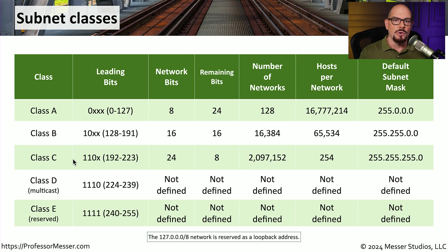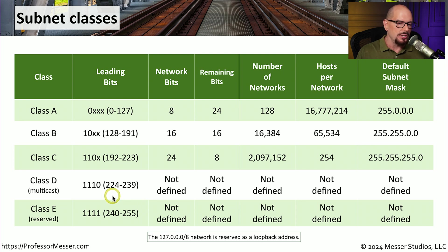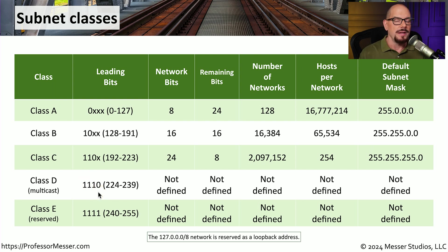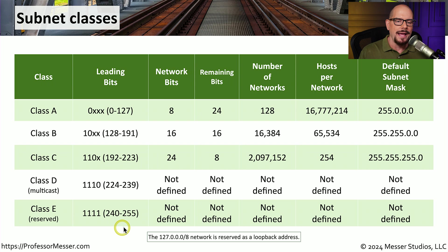Class D addresses are used for multicast communication, and therefore they are not assigned to an individual device. The range for class D addresses is between 224 and 239, or the first four bits are 1-1-1-0. There is also a range of IP addresses not used for any purpose — this is the reserved class E range, between 240 and 255, with the first four bits of 1-1-1-1.